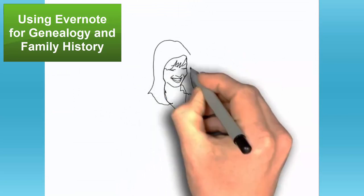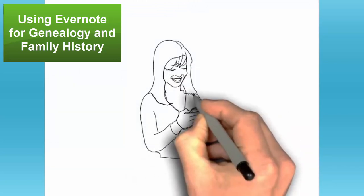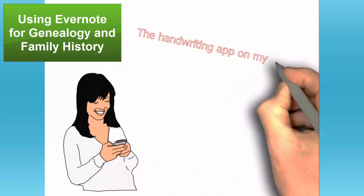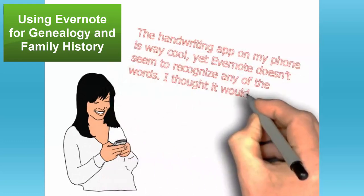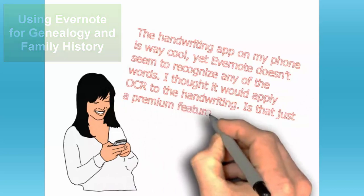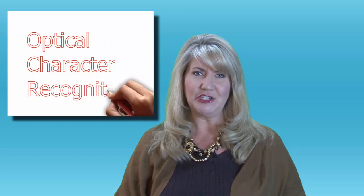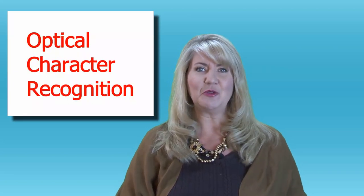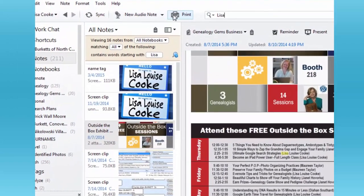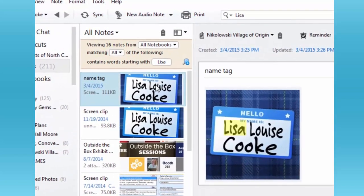She wrote: the handwriting app on my phone is way cool, yet Evernote doesn't seem to recognize any of the words that I thought it would by applying OCR to the handwriting. Is that just a premium feature? OCR is optical character recognition — that's what allows Evernote to read the text that appears in your images and web clippings. It can read handwriting, but the key is to print clearly. OCR cannot read cursive.